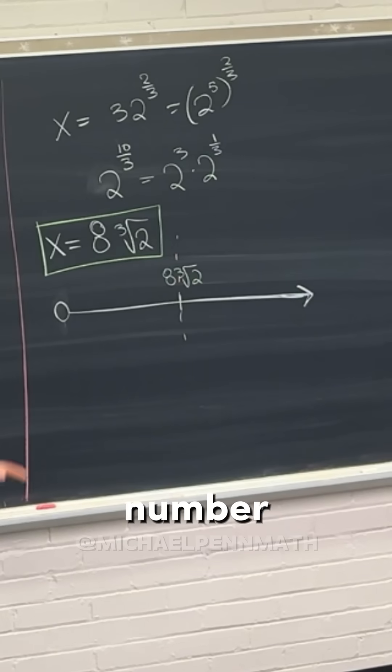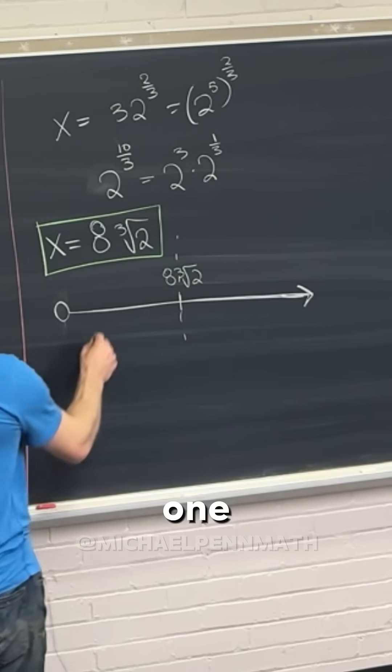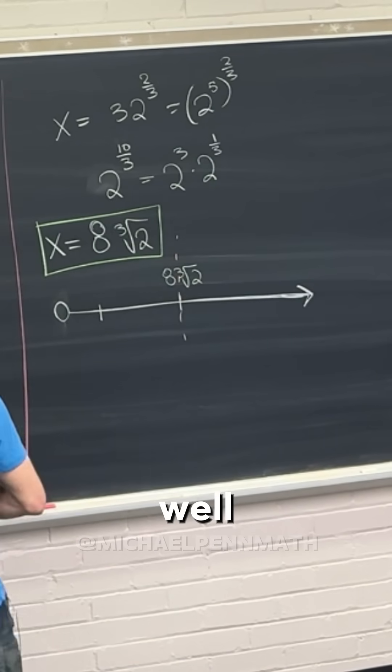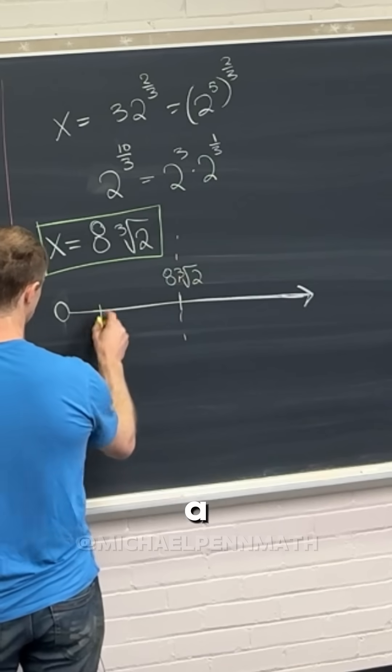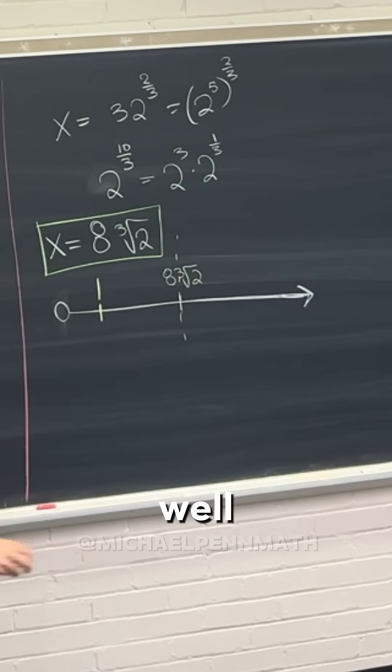So what's a good number that's smaller? One. Yeah, one, that's a good choice. And then finding a good number that's bigger is a little bit tricky because, well, what is that?